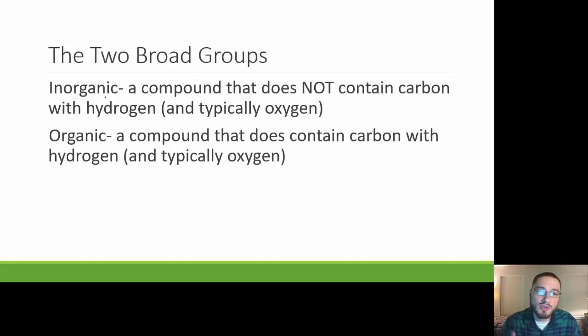There's two broad groups of compounds that we look at: inorganic and organic. The big thing to remember is that when we're talking about organic, it has carbon with hydrogen. If it does not have carbon with hydrogen, then it is inorganic. Something can have carbon, something can have hydrogen, but if it doesn't have both together, then it is inorganic. Also typically we see that there is oxygen involved. These organic compounds have carbon, hydrogen, and oxygen, but they don't need oxygen necessarily for them to be considered organic.